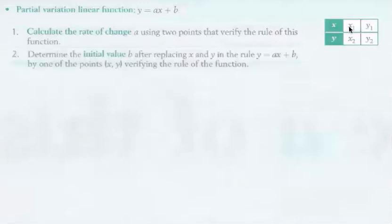So we have, you have an x value and a y value. You have an x1, a y1, and an x2, and a y2. First, calculate the rate of change a using two points that verify the rules for this function. So right away, you're going to figure out the rate of change, delta y over delta x.